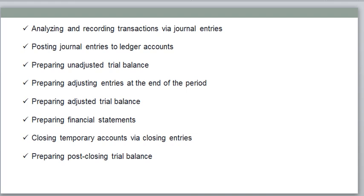After that, preparing adjusting entries at the end of the period. We need to prepare financial accounts for one accounting period. Any unadjusted entries can be adjusted. After that, again we need to prepare the trial balance. Then we need to prepare the financial statements. Then we need to prepare closing temporary accounts via closing entries. Then we need to prepare the post-closing trial balance. This is the purpose of the accounting cycle.